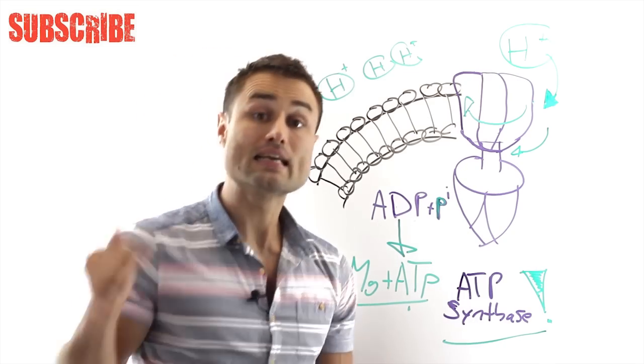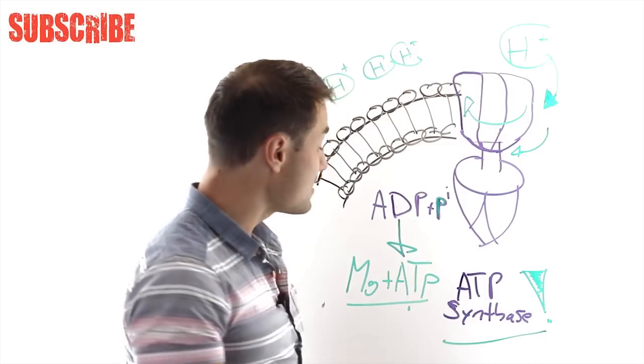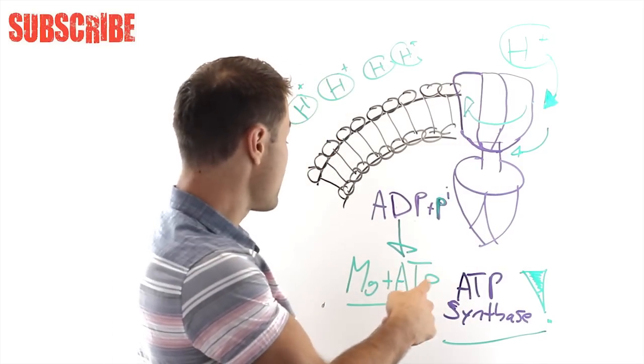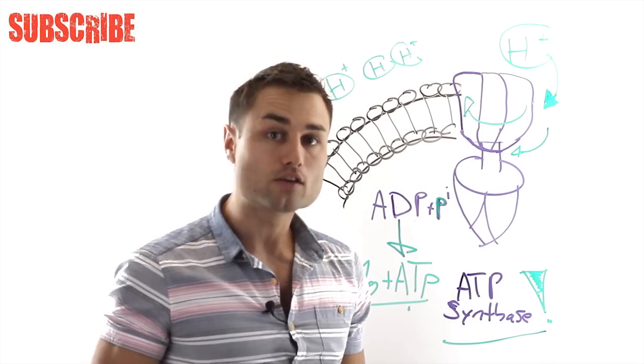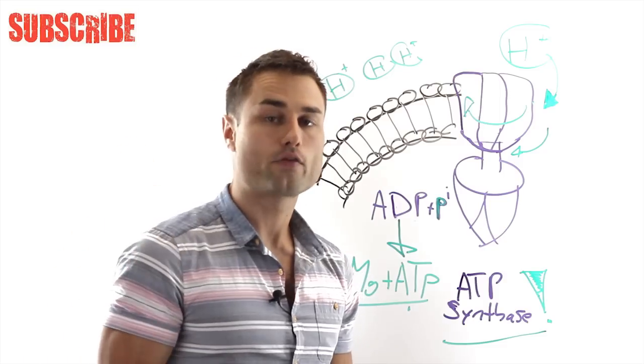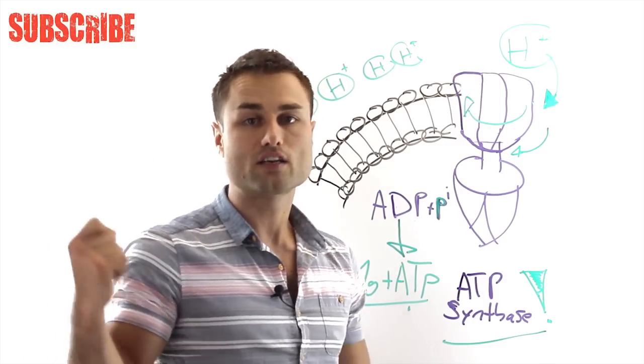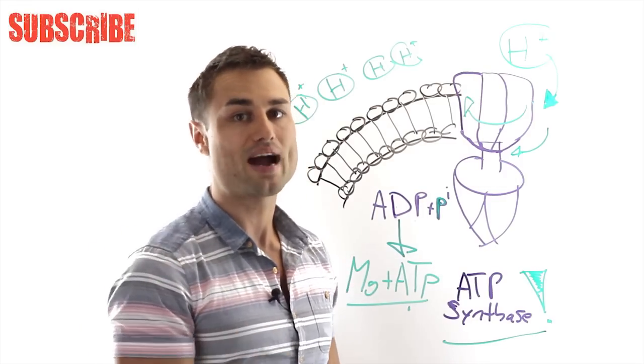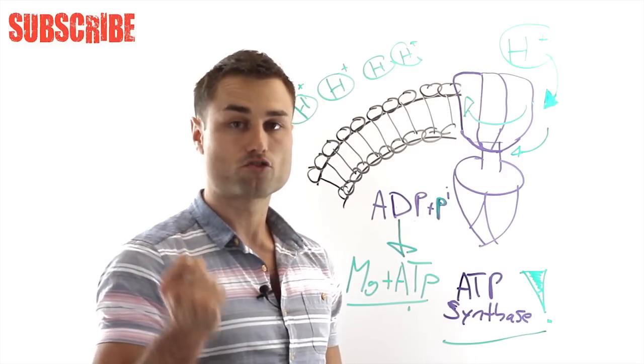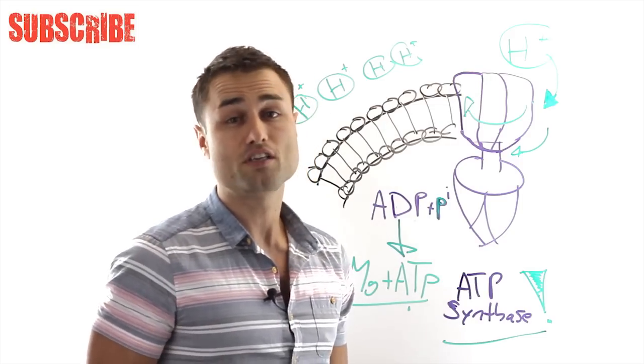This is where the magnesium connection happens. As you can see, ATP should actually be called magnesium ATP, because without magnesium you cannot create ATP. So it's mandatory. Magnesium is a molecule of life. Through our industrial revolution, our farming practices, and because we're very stressed out today, our magnesium levels are extremely low.